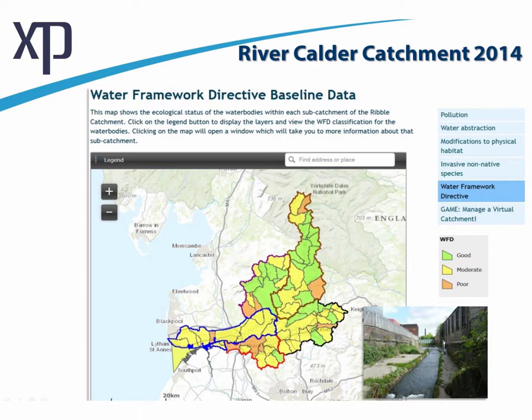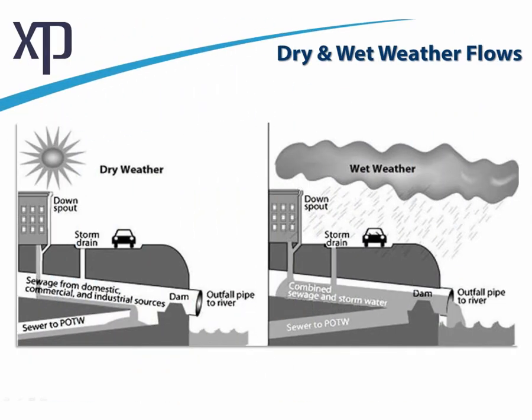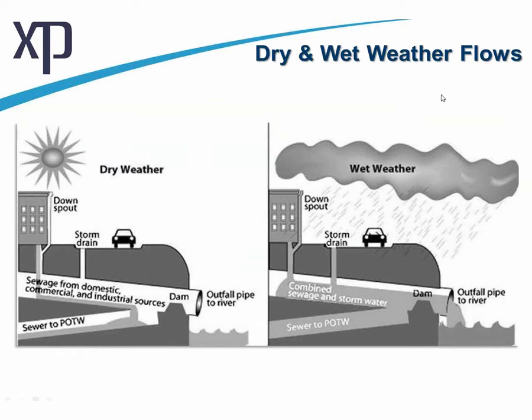Thank you Peter, welcome everyone. I'm going to start with dry weather flow and wet weather flow. Looking at the left image: the dry weather flow comes from buildings and goes through the freedom ports — this is when we have sunshine, looking at sewage from residential, commercial, and industrial sources. But when we have rainfall storms, on top of that we have flow coming from storm drains and from roofs. So we have more flow — this is called the wet weather flow.